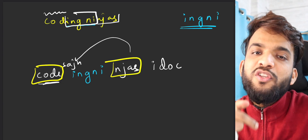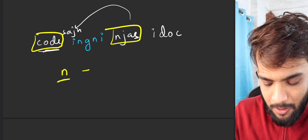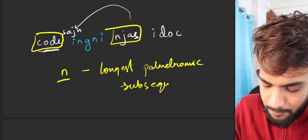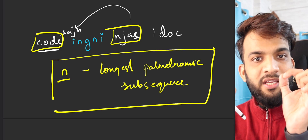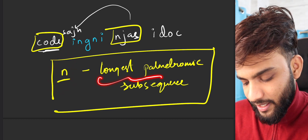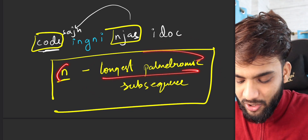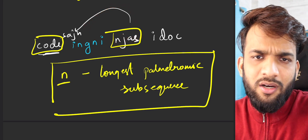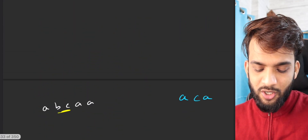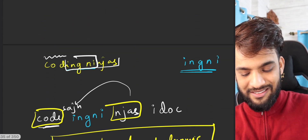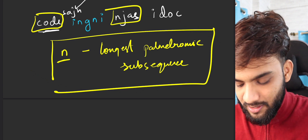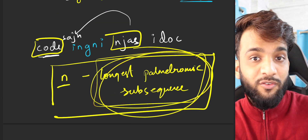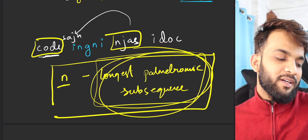So the number of insertions required is the length of the string minus the longest palindromic subsequence. This is the answer. If I know the string length and the longest palindromic subsequence, I keep those intact and copy-paste the rest. It's simply N minus longest palindromic subsequence — that's what you need to return.